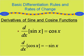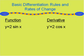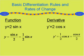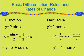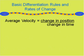Next, let's look at the derivatives of the sine and cosine functions. The derivative of sine x is equal to cosine x, and the derivative of cosine x is equal to negative sine x. For example, for y equals 2 sine x, y prime equals 2 cosine x. For y equals sine x over 2, rewritten as 1/2 times sine x, the derivative is 1/2 cosine x. For y equals x plus cosine x, y prime equals 1 minus sine x.